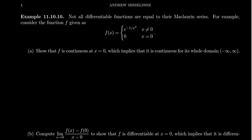Since we define f of x to equal e to the negative one over x squared for every number except x equals zero, it's going to be continuous everywhere except potentially at zero. This is a piecewise function. Is there a discontinuity at zero? Let's investigate this — we'll actually see that this function is continuous.